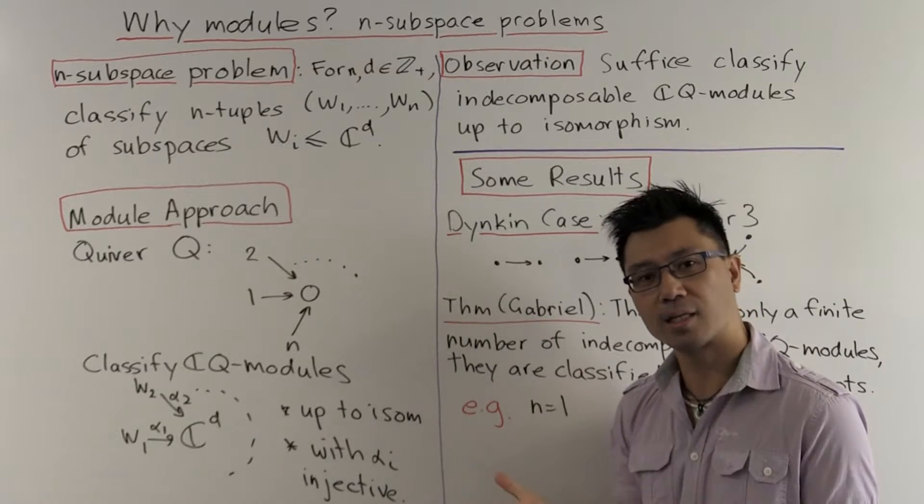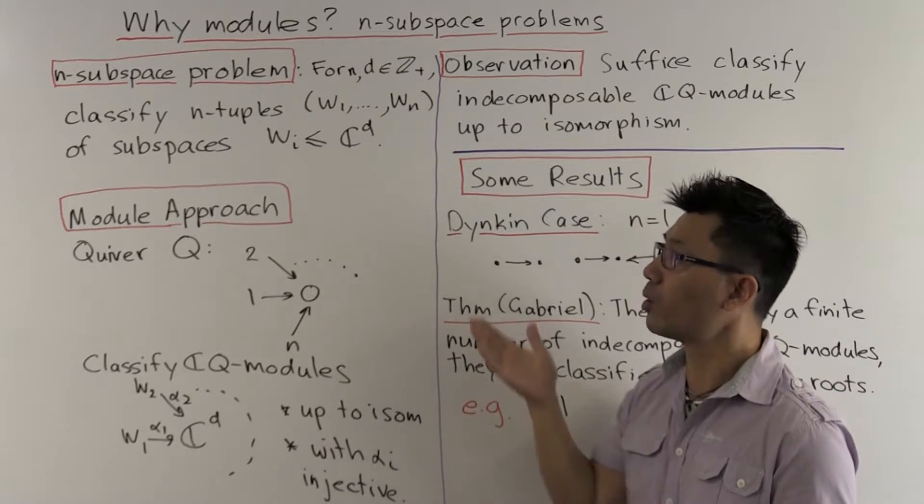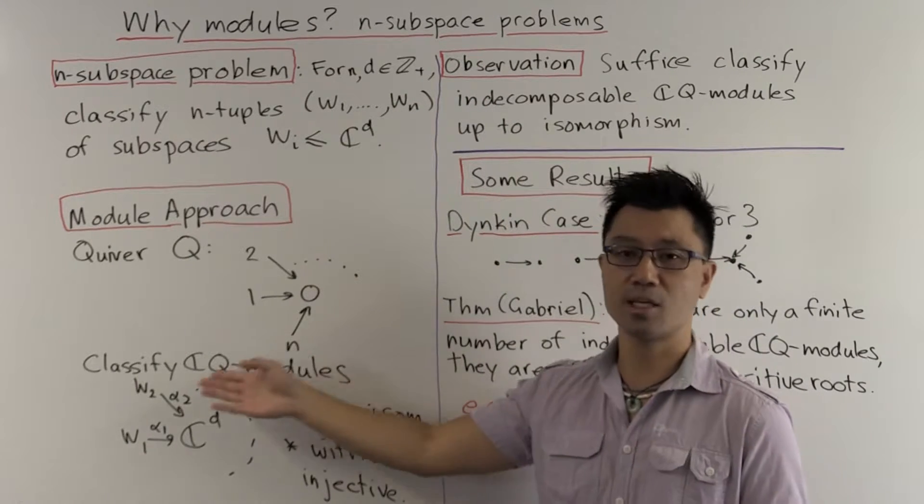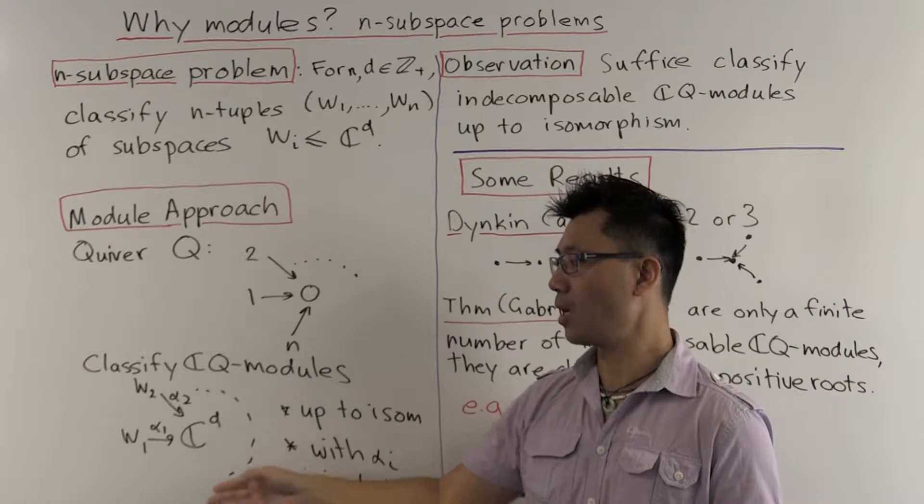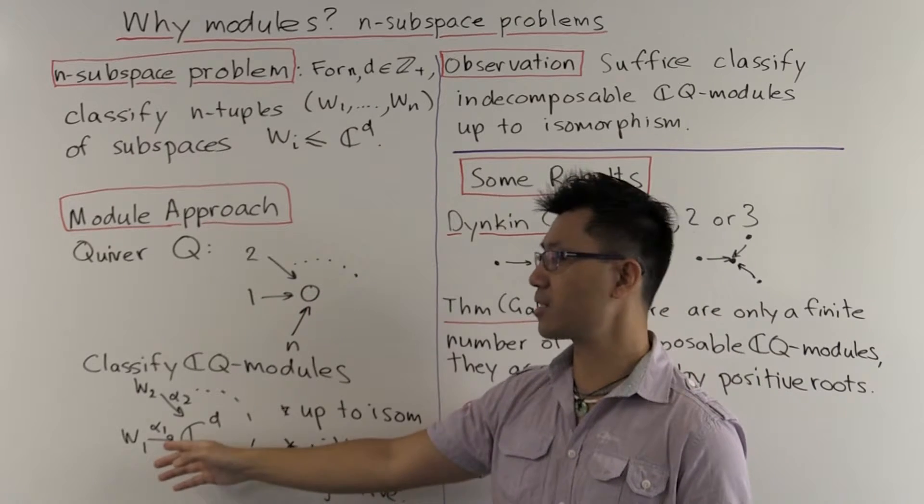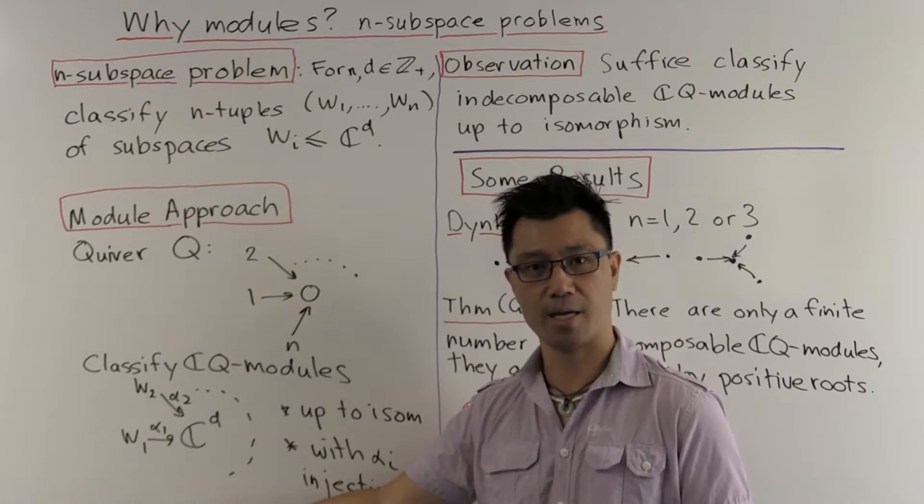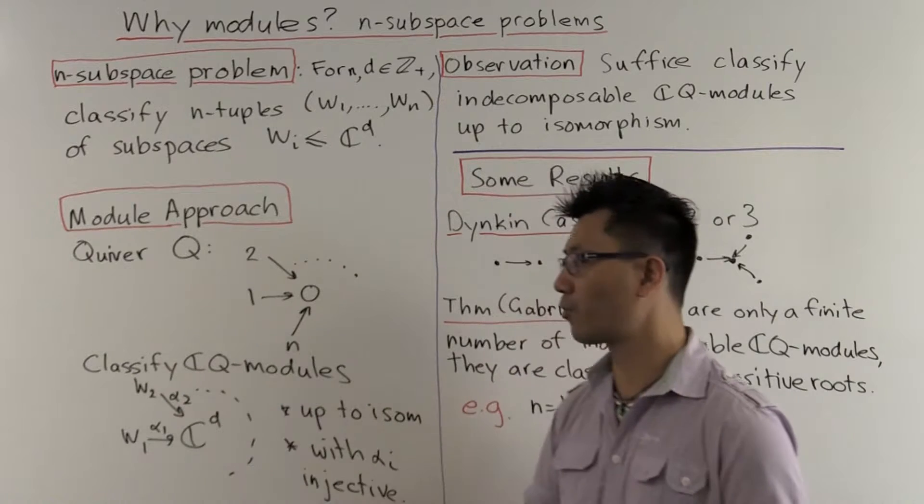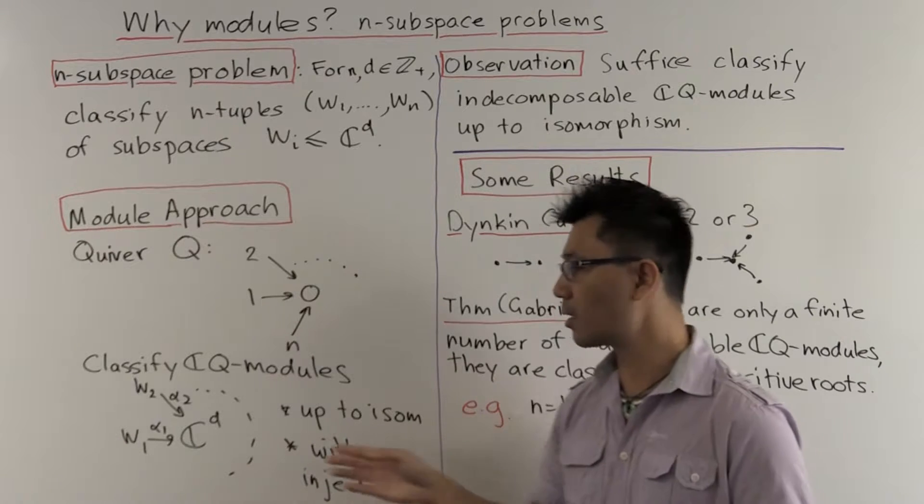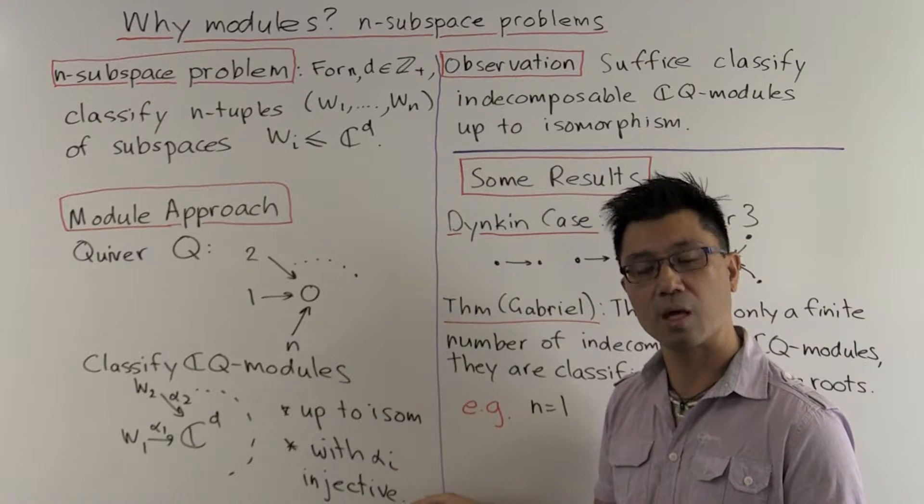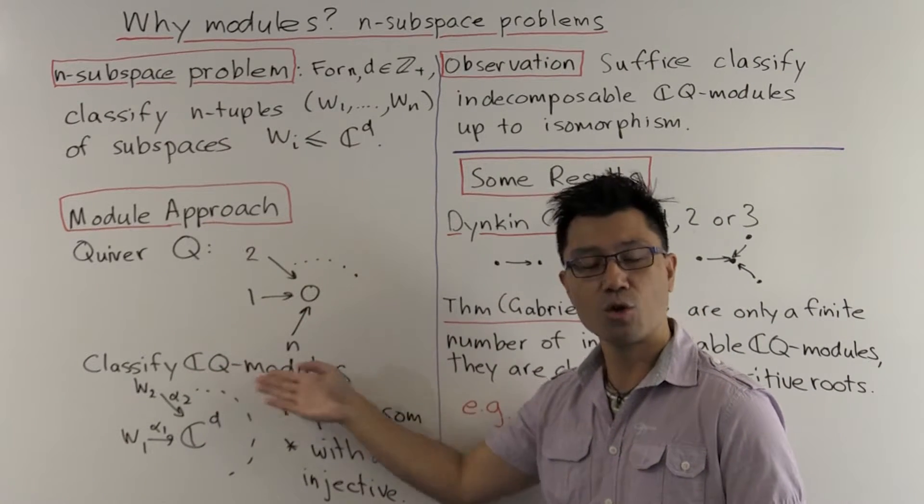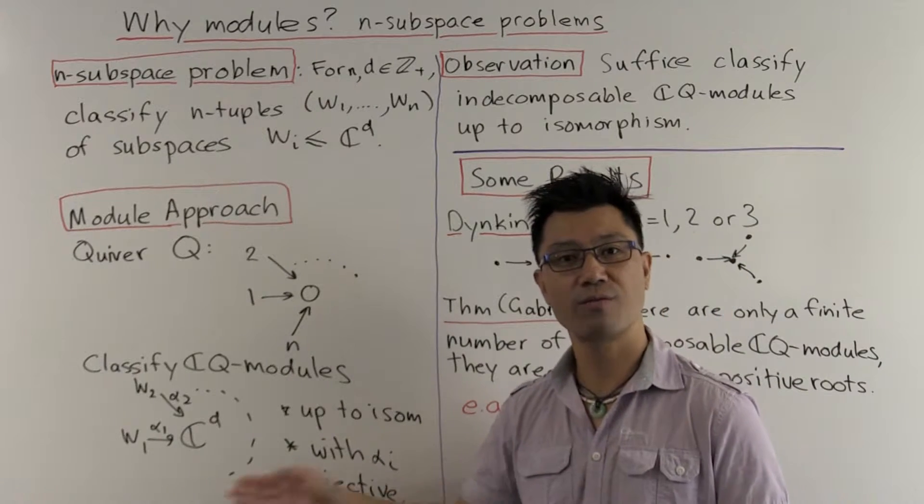The point is that if we use this ring, we can reformulate this problem in a nice way using modules. Basically, what we're looking at when we're looking at a situation like this is we're looking at a CQ module of the following form, where you have Cd in the middle corresponding to the 0, and the subspaces w1, w2 around the outside. And of course, that means that these maps alpha 1, alpha 2, up to alpha n, they have to be injective.